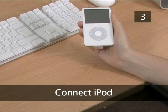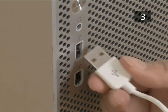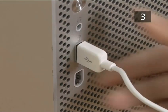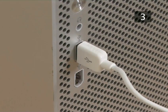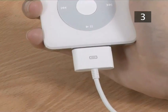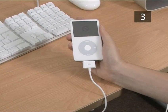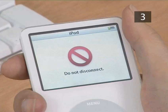Step 3: Connect the iPod. Plug the smaller end of the cable, which is the USB connector, into the USB port of your computer. This can be identified by the USB logo. Plug the other end of the cable, which is called the dock connector, into the base of your iPod. A 'Do Not Disconnect' message will show up on the iPod screen.